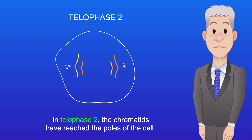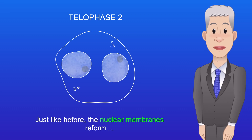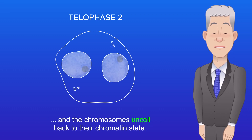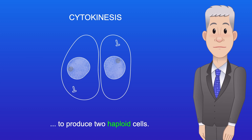In telophase II, the chromatids have reached the poles of the cell, and we now call them chromosomes. Just like before, the nuclear membranes reform and the chromosomes uncoil back to their chromatin state. Finally, each cell undergoes cytokinesis to produce two haploid cells.